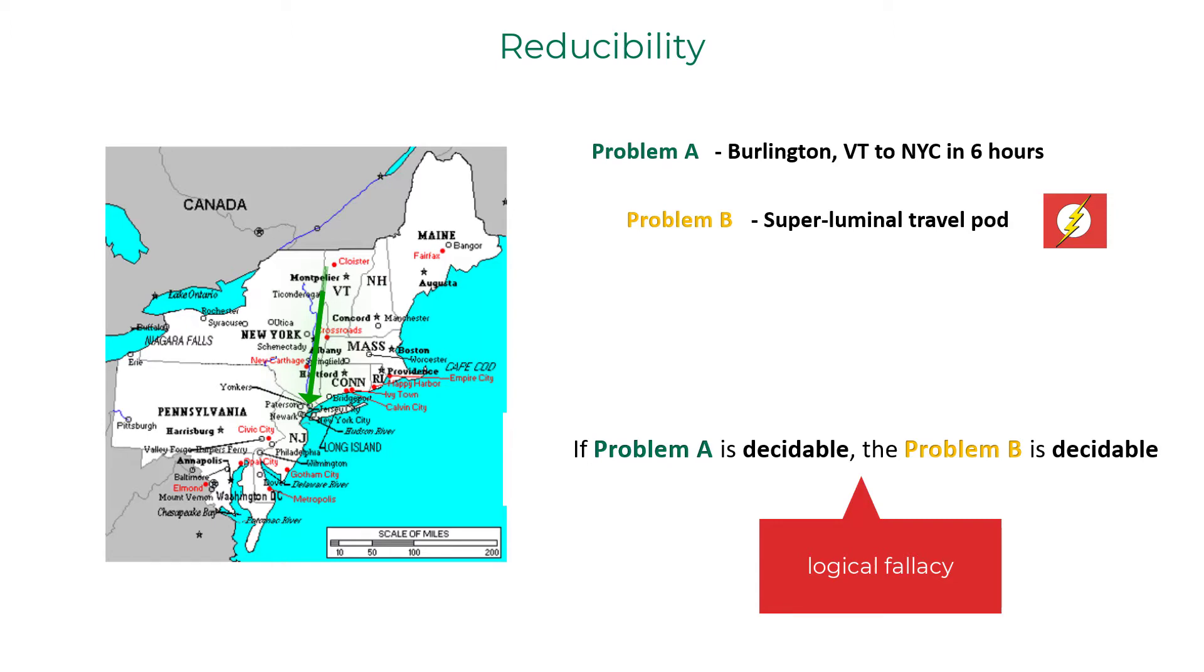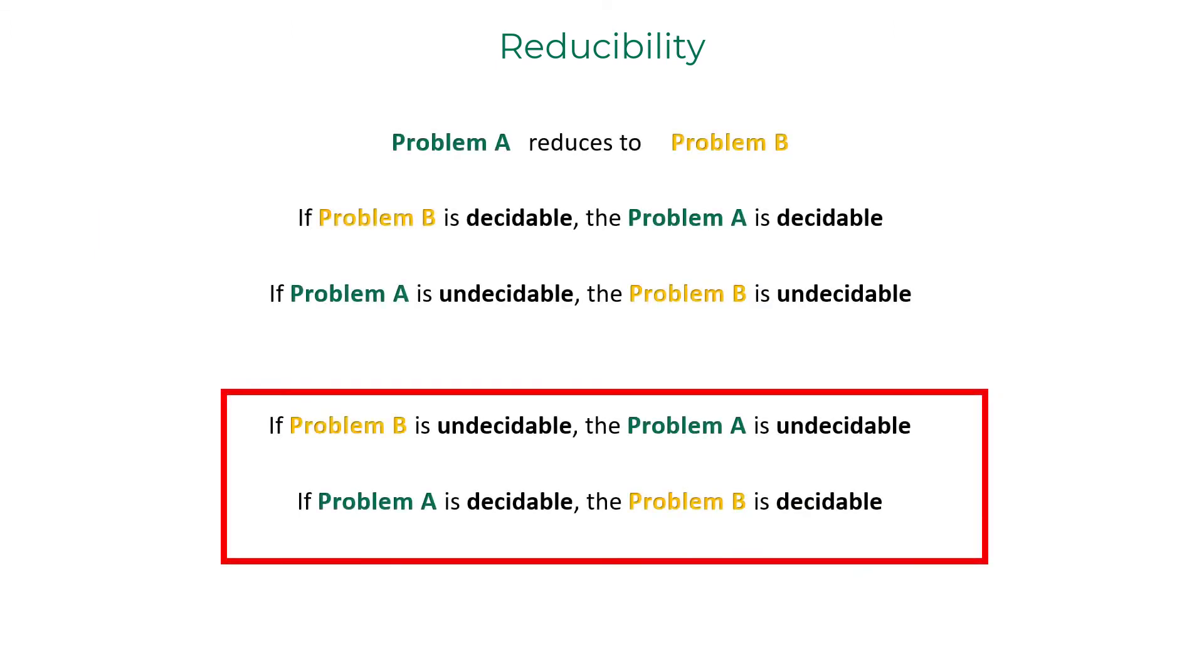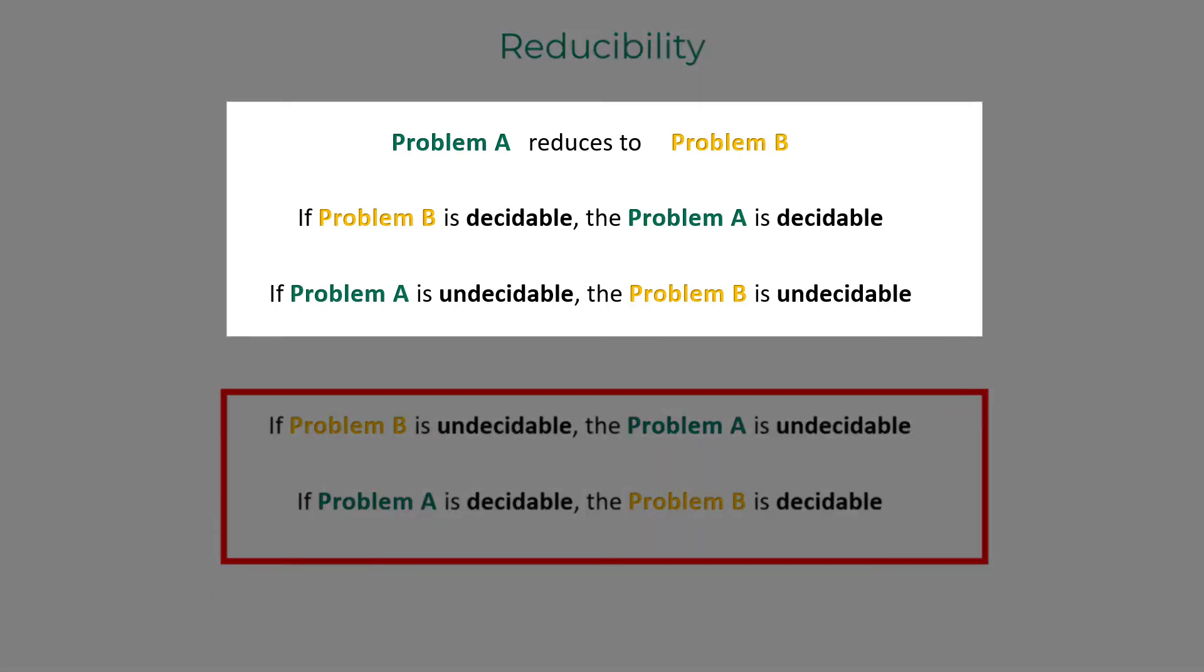I will end this video by repeating the underlying technique used in the problems pertaining to reducibility. When problem A reduces to problem B and problem B is decidable, then problem A is decidable. When problem A reduces to problem B and problem A is undecidable, then problem B should be undecidable. So just focus on these two statements and ignore the other two statements that I have here.